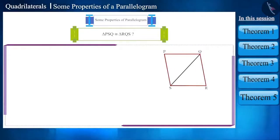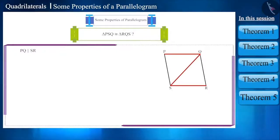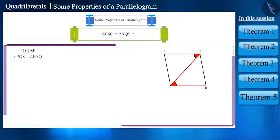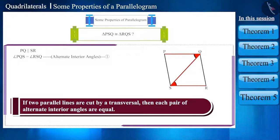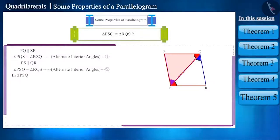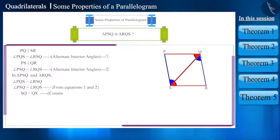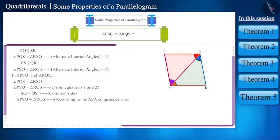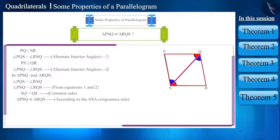This is a parallelogram. Therefore, side PQ is parallel to side SR, and QS is the diagonal. So both angles PQS and angle RSQ will be equal, as these are alternate interior angles. Similarly, angle PSQ and angle RQS will also be equal. Now look at triangles PSQ and RQS — this pair of two angles are equal and side SQ is the common side. Therefore, both these triangles are congruent according to the ASA congruence rule. We can say that diagonal QS divides parallelogram PQRS into two congruent triangles.